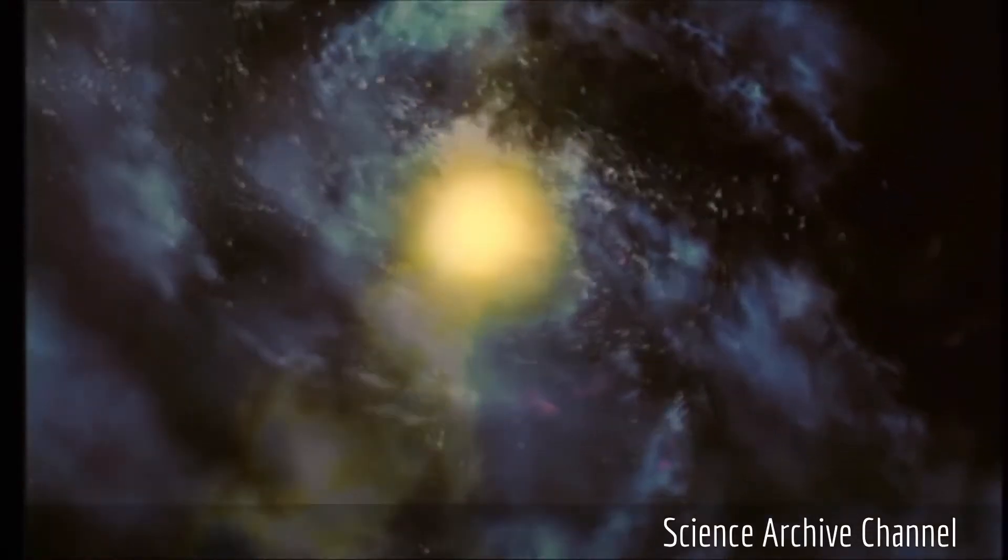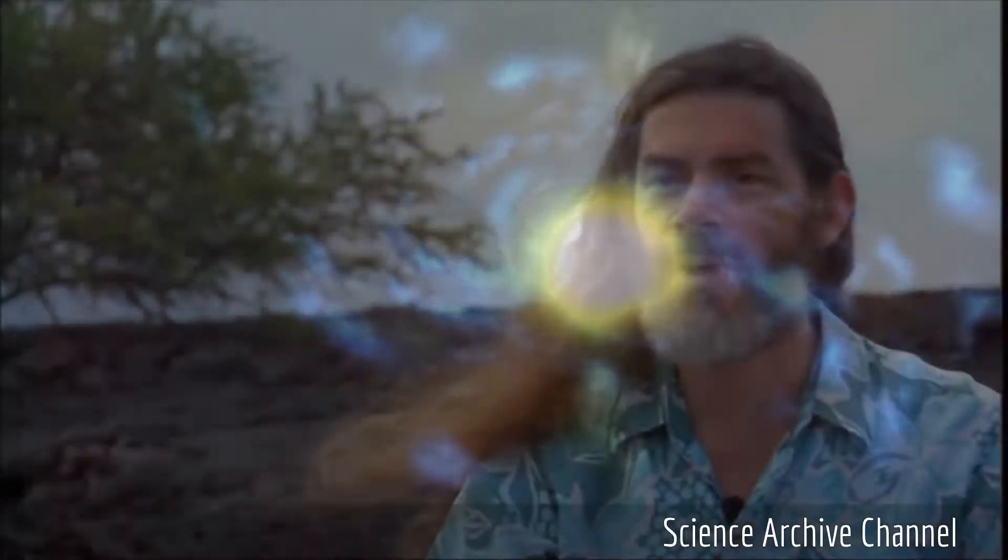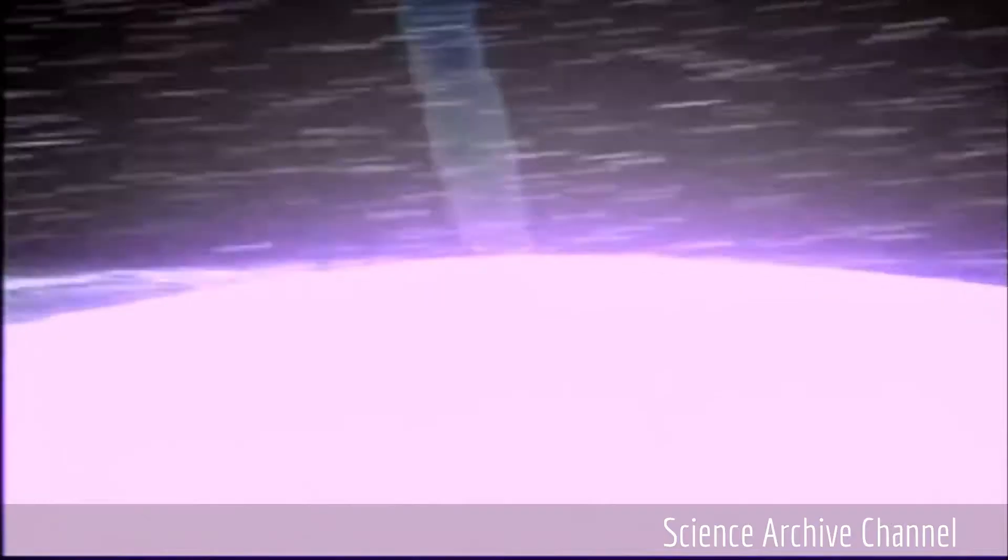When they merge, they're going to form a new galaxy, and these two supermassive black holes will gradually spiral into the middle of the new galaxy. They will be a binary black hole for a short time.